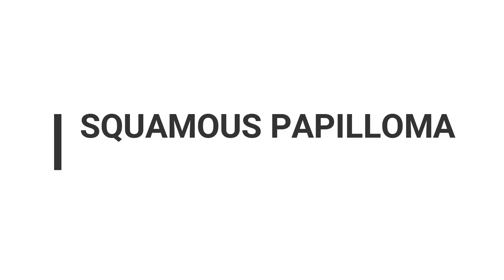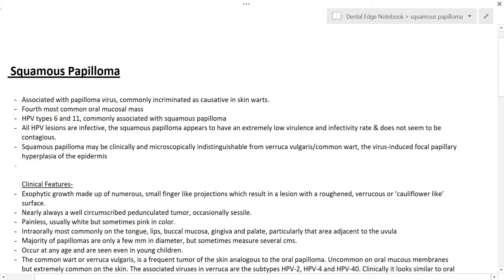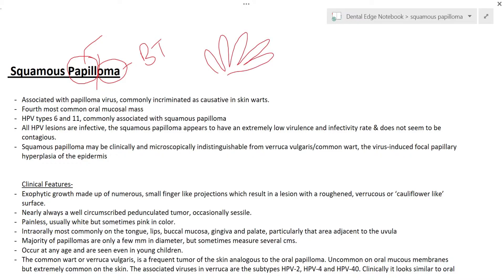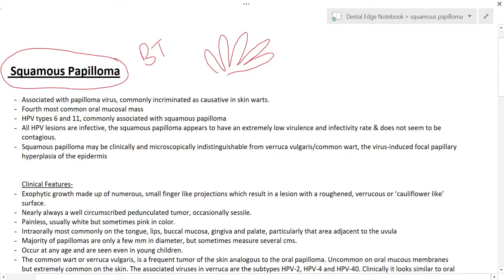Let's first divide the word 'papilloma' into two parts. 'Oma' means a benign tumor, so we are clear it's a benign tumor. 'Papilla' means finger-like projections. So papilloma is a benign tumor that shows finger-like projections. Since it involves the oral epithelial squamous cells, it is called squamous papilloma, or oral squamous papilloma.